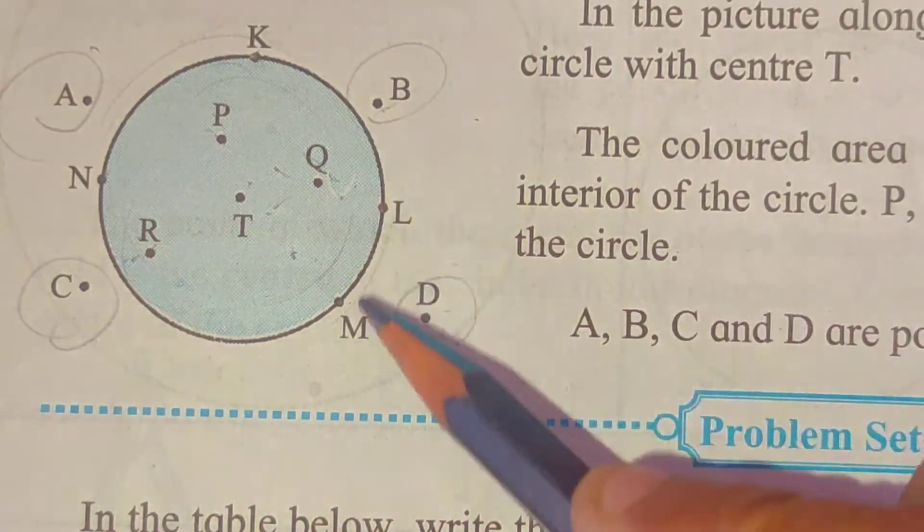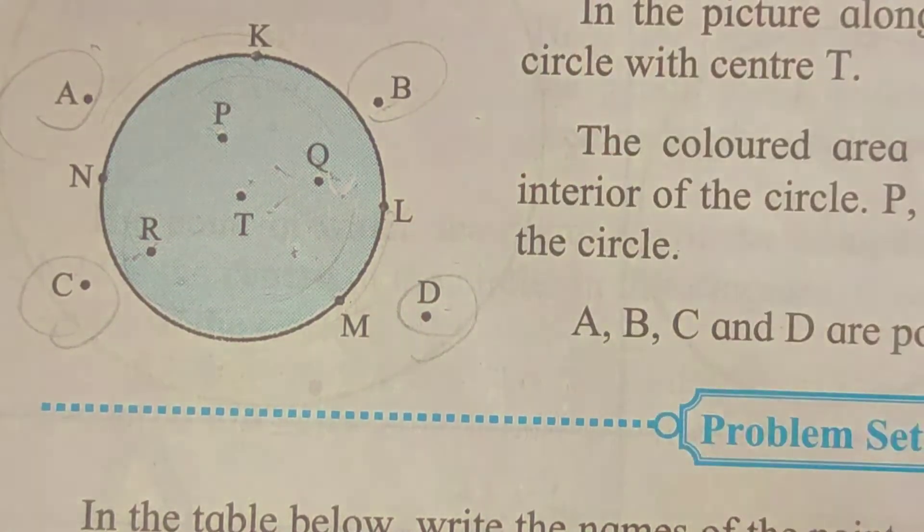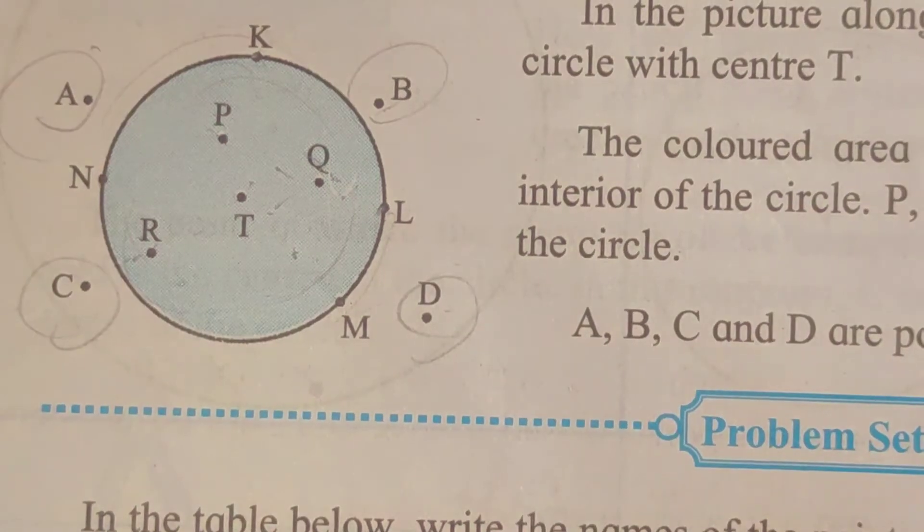और जो circle के borderline में है, those points are said to be points on the circle, on circle पे, on the circle.